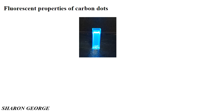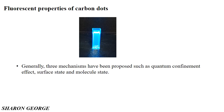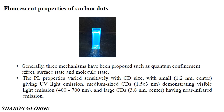How do carbon dots produce fluorescence properties? Generally, three mechanisms have been proposed: quantum confinement effect, surface state effect, and molecular state effect. Based on the quantum confinement effect, we know that quantum dots have similar properties, and the optical properties vary sensitively with the dot size — that means the photoluminescence, the fluorescence property.